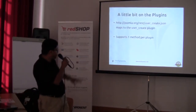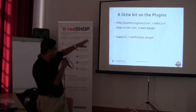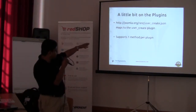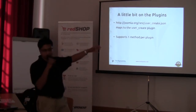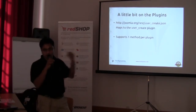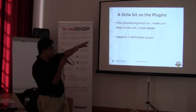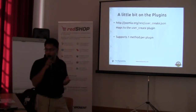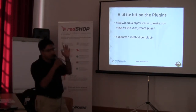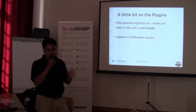A quick overview of how it works: let's say you put this API on Joomla.org and then you call joomla.org/rest/user_create.json. The dot-json means that the response is expected in JSON format, and this maps to the user_create plugin that you installed using your regular Joomla installer. That's the way the URLs and the plugins map.